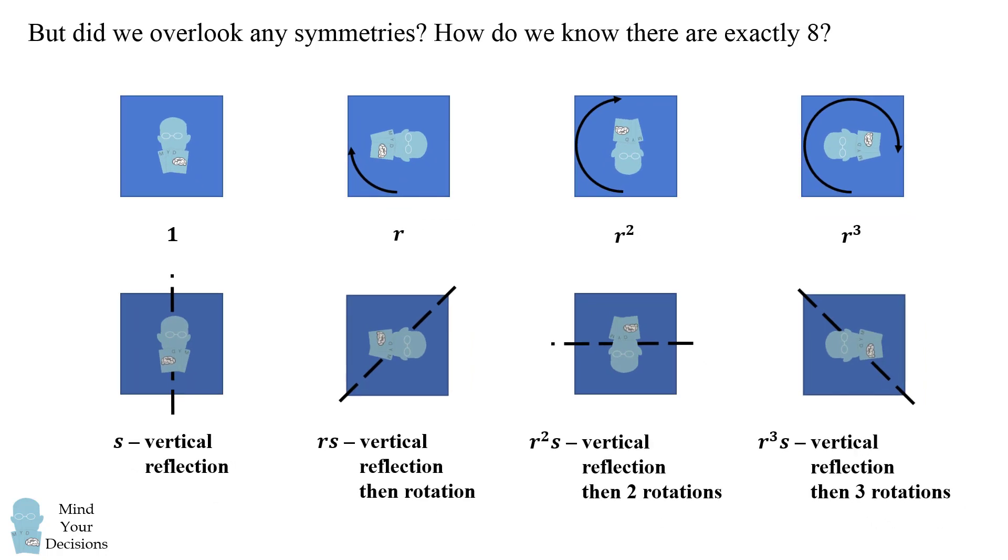But did we overlook any symmetries? How do we know there are exactly eight symmetries of the square? Well, let's do a quick proof. I claim there are eight symmetries of a square. It's the dihedral group of order 8. There are no other symmetries.